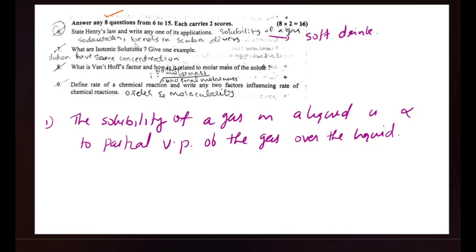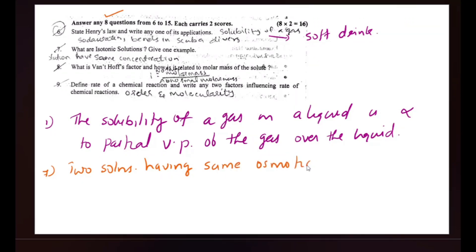What are isotonic solutions? Isotonic solutions are two solutions having the same osmotic pressure at a particular temperature.